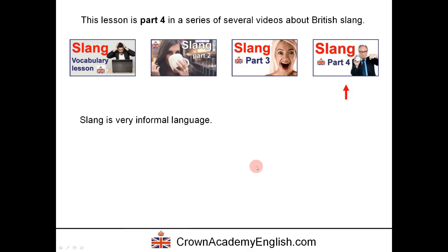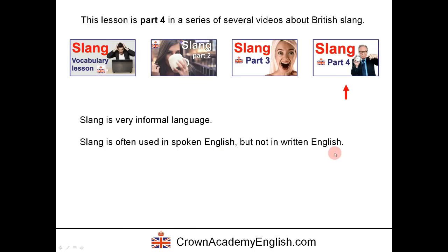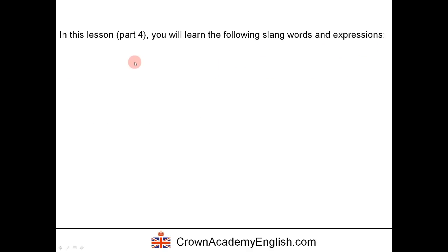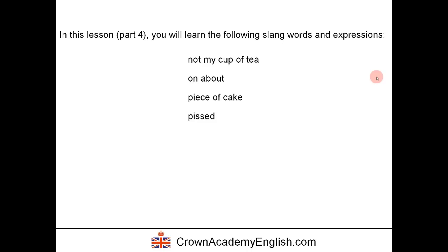Very quick revision — this will take 10 seconds. Slang is very informal language. It is often used in spoken English but not in written English. We often consider it to be not good English, but it is very common, and therefore it is important for you to understand it. In this lesson, part 4, you will learn the following slang words and expressions: not my cup of tea, on about, piece of cake, pissed, plastered, pissed off, prat, and quid.